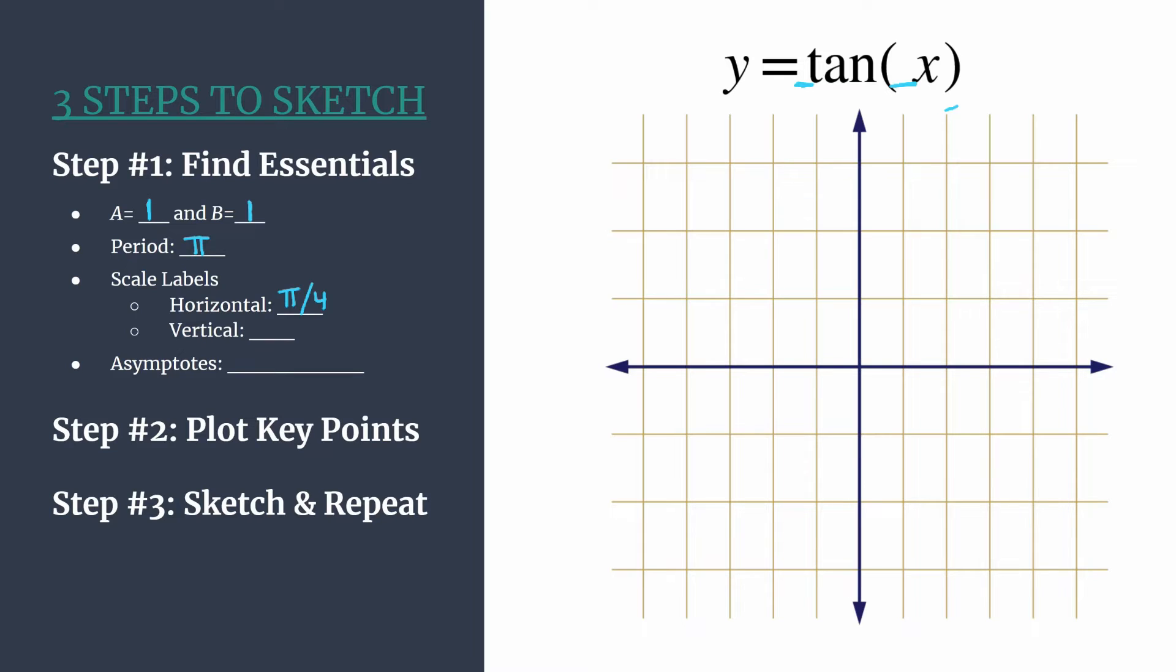For our vertical scale labels, usually we can just use the absolute value of a. One is a good label, and that's what it is in this case. So we will count our vertical tick marks by ones.